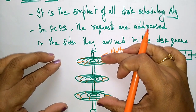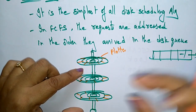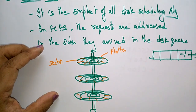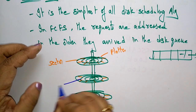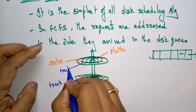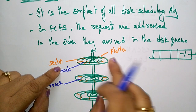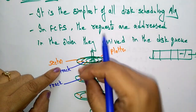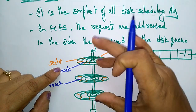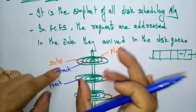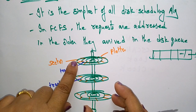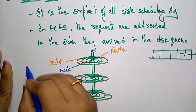A platter consists of surfaces — the top and bottom of each disk. A surface is one side of a platter, and the complete stack is called the platter. Each surface has tracks, and inside the tracks there are sectors. The data is stored in the sectors.